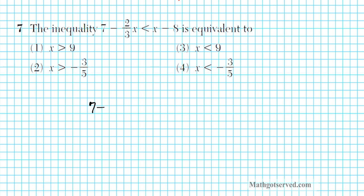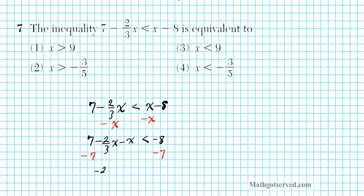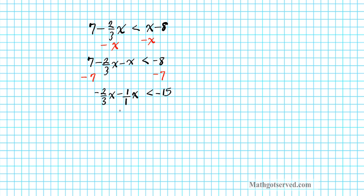We have 7 minus 2/3x less than x minus 8. I like my x's on the left side, so I'm going to subtract x from both sides. That yields 7 minus 2/3x minus x less than negative 8. Then I subtract 7 from both sides to get the x terms alone, yielding negative 2/3x minus 1x less than negative 15.